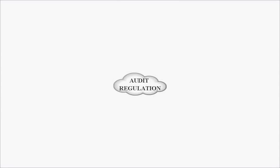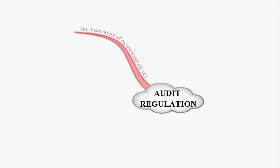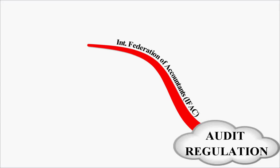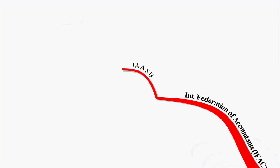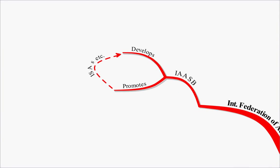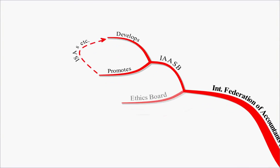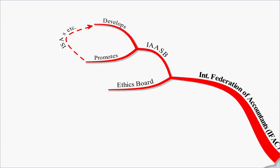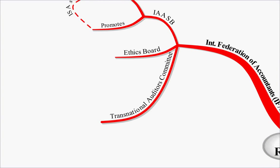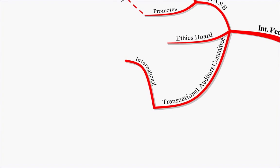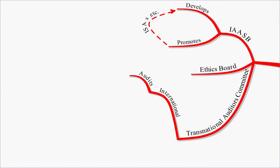Welcome to the first ACCA P7 Advanced Audit and Assurance lecture recap. The first lecture was on Audit Regulation, and the first thing we looked at was the International Federation of Accountants, or IFAC. The three main areas we need to concern ourselves with are the International Audit and Assurance Standards Board, who are responsible for developing and promoting the ISAs and other assurance regulations; the Ethics Board, responsible for ethics; and the Transnational Auditors Committee, responsible for international audits, which we look at throughout the module.